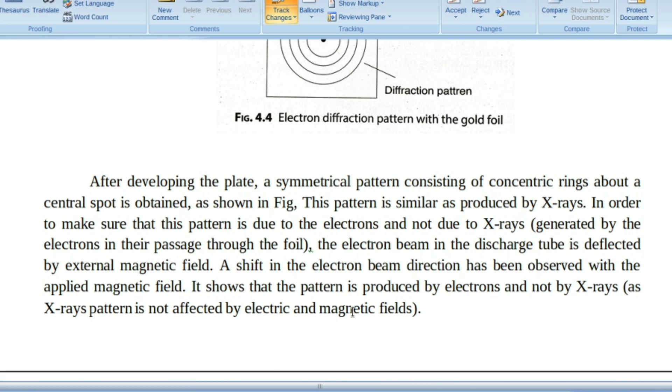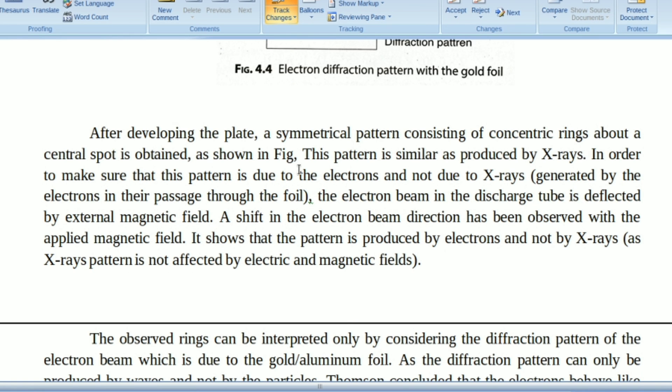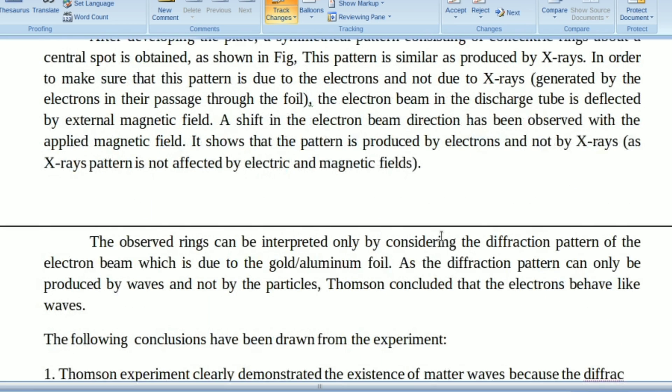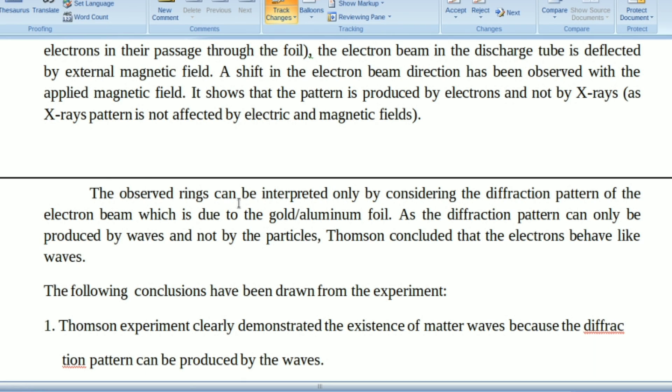The observed rings can be interpreted only by considering the diffraction pattern of the electron beam, which is due to the gold or aluminum foil. As the diffraction pattern can only be produced by waves and not by particles, Thomson concluded that electrons behave like waves.